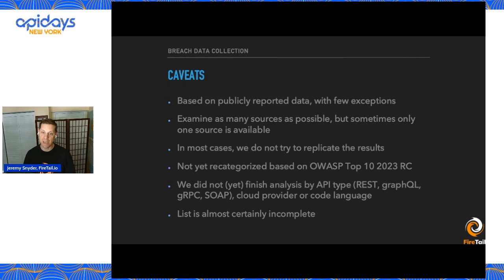We've not yet analyzed by API type — we're looking at four primary API types. We've also not analyzed based on cloud providers or code languages, which are things that we think are actually really interesting, but we haven't gotten to yet.